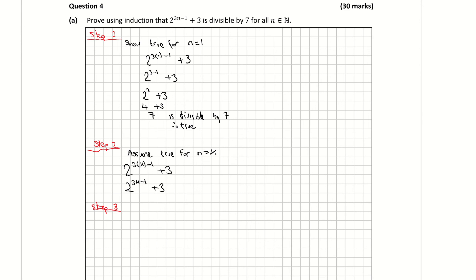Step 3 is going to be: prove true for n equals k plus 1. So this time for n, I'm subbing in k plus 1. That's going to give me 2 to the power of 3 times (k plus 1), and then subtract 1, plus 3. Tidying up, I'm just going to multiply the 3 into the bracket. So that's giving me 2 to the power of 3k plus 3, subtract 1, and then plus 3.